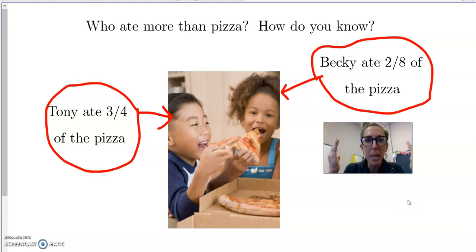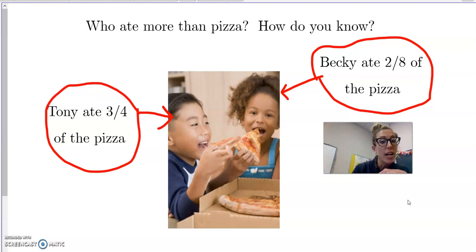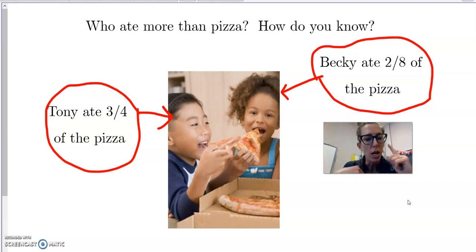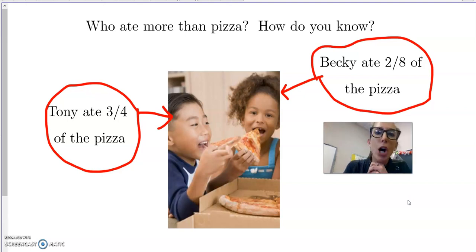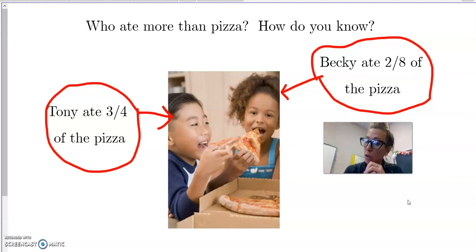Let's start off with some pizza action. The question is right there on the screen: who ate more pizza? Tony ate three fourths of the pizza. Did he eat the whole thing? No - he ate a fraction of it, a part of it. Three fourths of it. If he would have eaten four fourths that would have been the whole thing. He was close to eating the whole thing but he only ate three fourths.